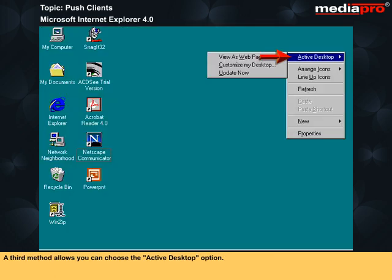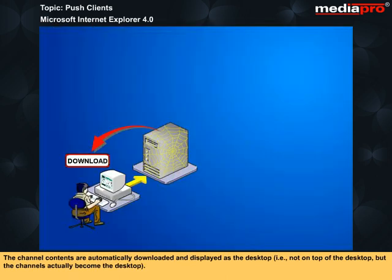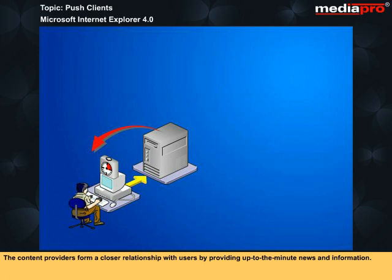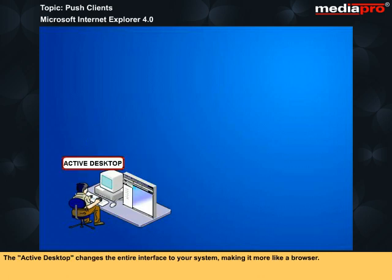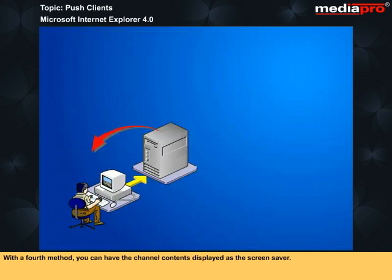A third method allows you to choose the Active Desktop option. The first two methods are considered push, but it is the Active Desktop method which fits the push model most closely. The channel contents are automatically downloaded and displayed as the desktop — that is, not on top of the desktop, but the channels actually become the desktop. Content providers form a closer relationship with users by providing up-to-the-minute news and information. The Active Desktop changes the entire interface to your system, making it more like a browser. With a fourth method, you can have the channel contents displayed as a screensaver. The look is similar to that of the Active Desktop, but the contents appear as a screensaver instead of as the desktop.